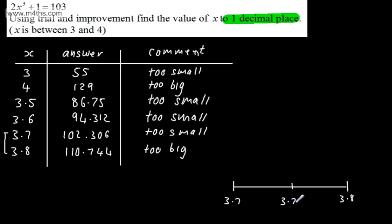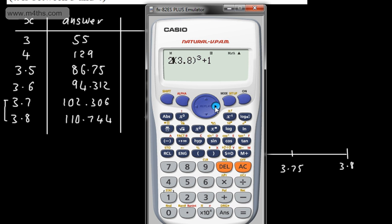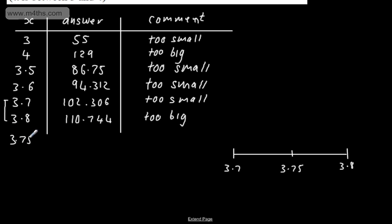Alternatively, we can just now try the midpoint. So what we've got then, if we just put this in, we've got 3.75. So we can see 3.75 goes in, and we end up now with 106.46.